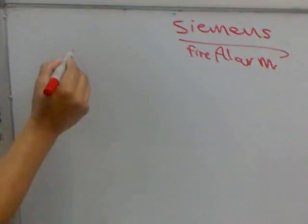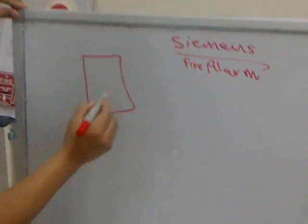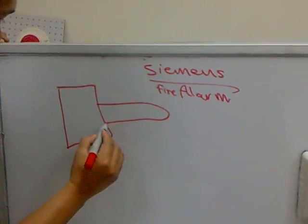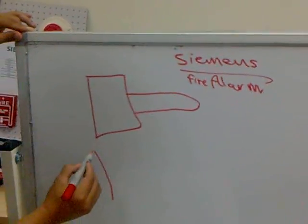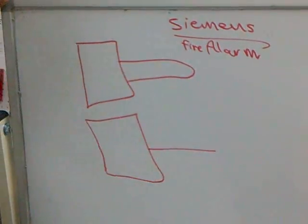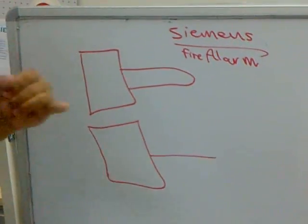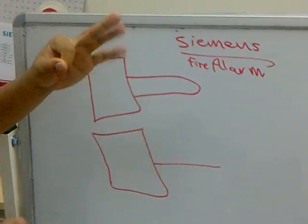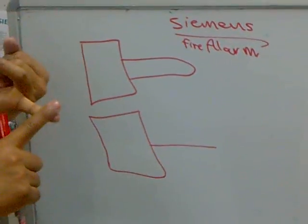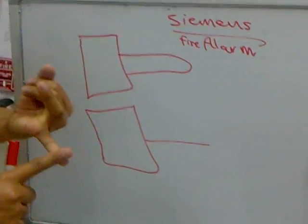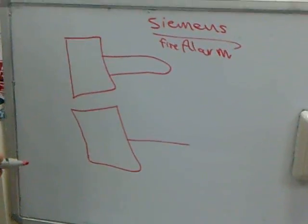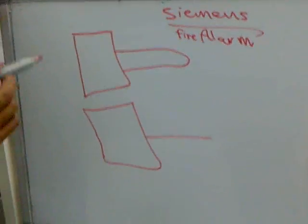So here we have a panel. How many types of panel do we have? We have three types of panel: CAB1, CAB2, and CAB3. CAB3 is the bigger one, CAB2 is the middle, and CAB1 is the smaller one. In our project, we use CAB3 and CAB2.